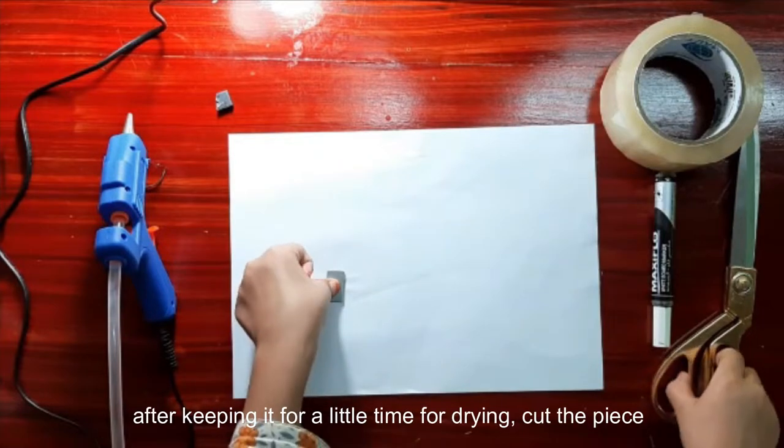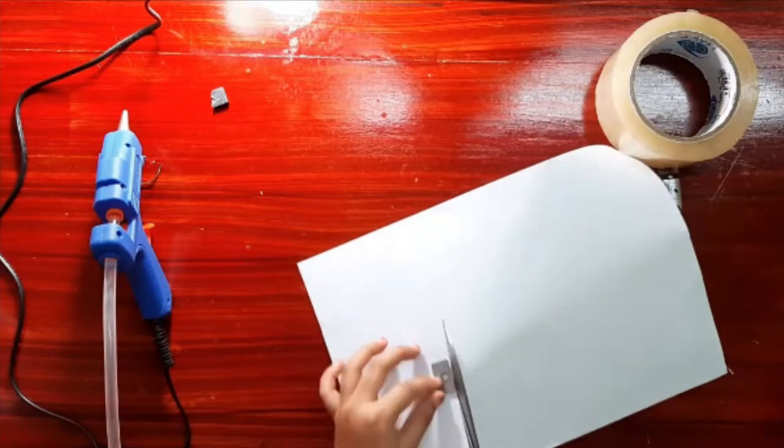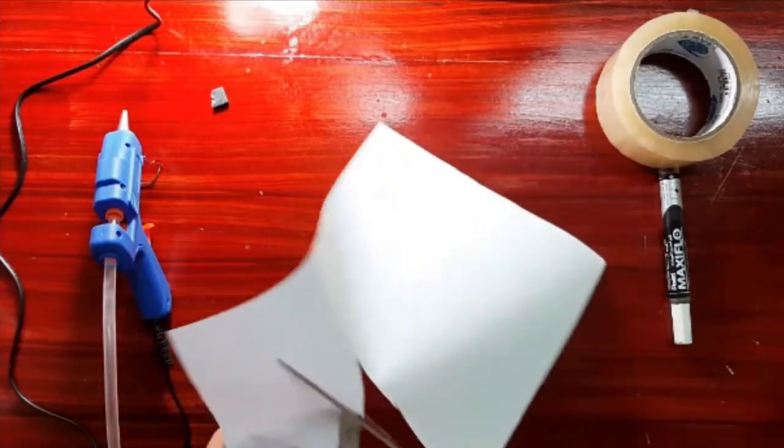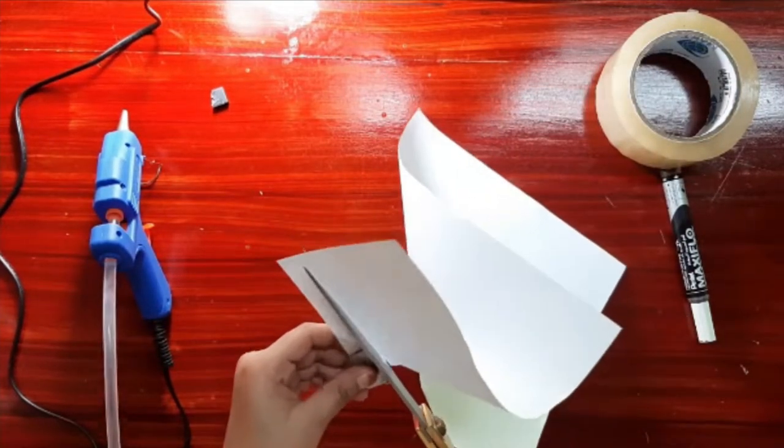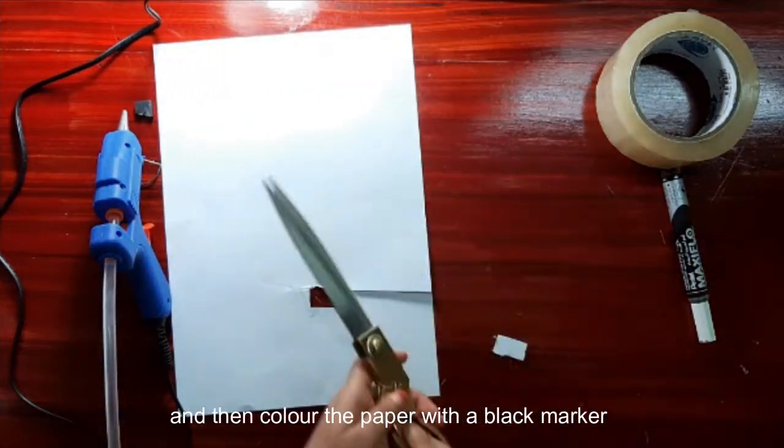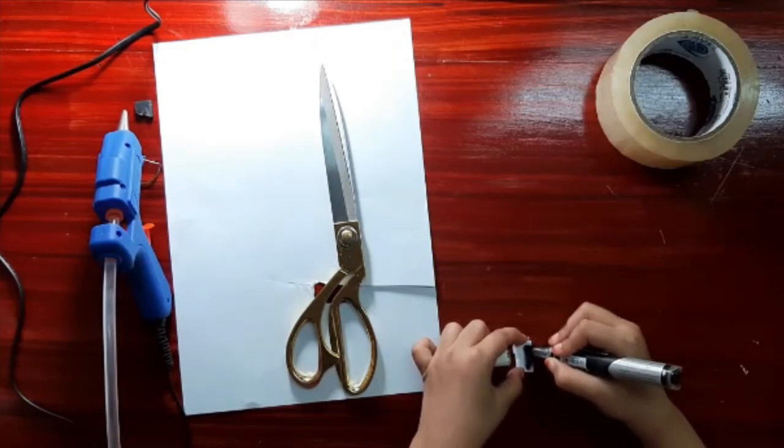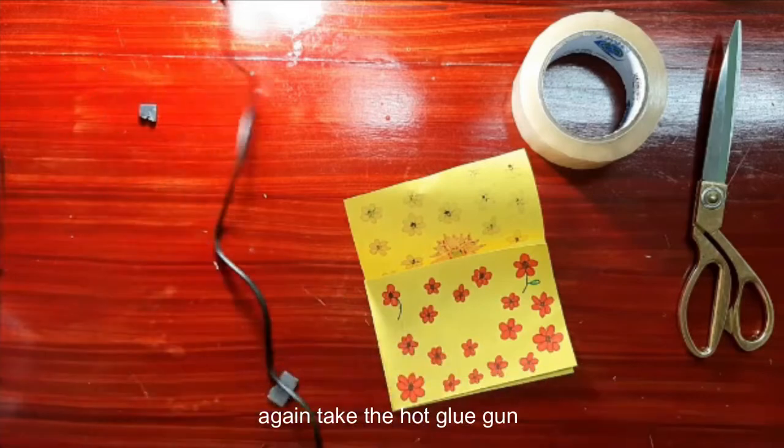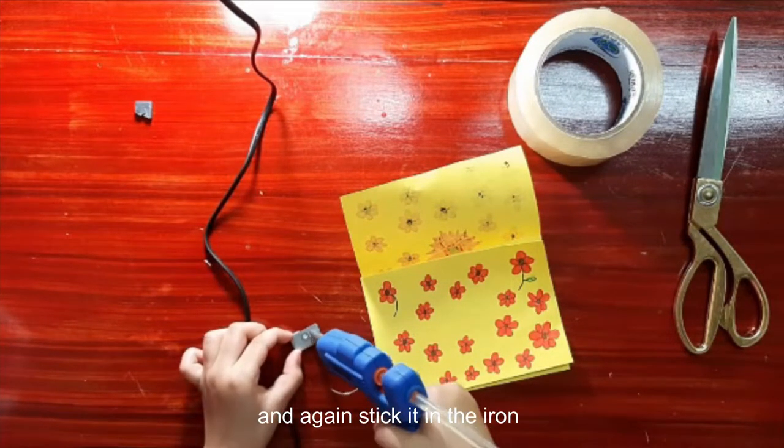After keeping it for a little time for drying, cut the piece. And then color the paper with the black marker. After coloring, again take the hot glue gun and stick it to the iron.